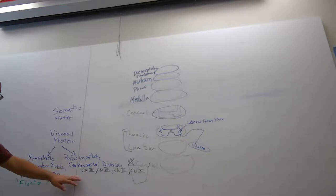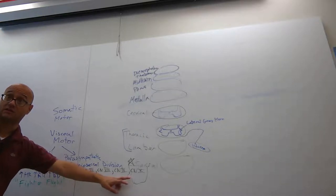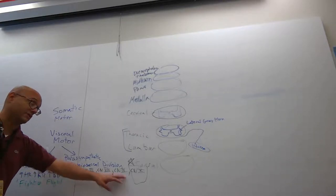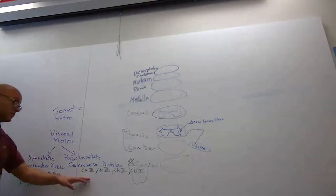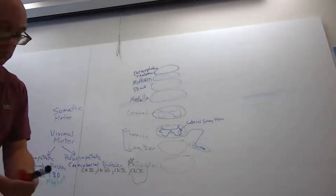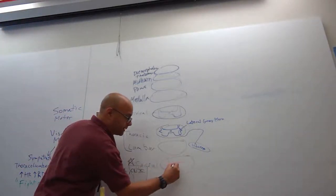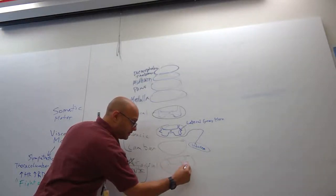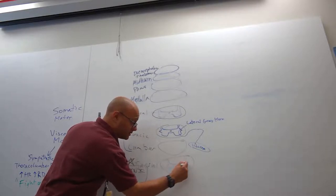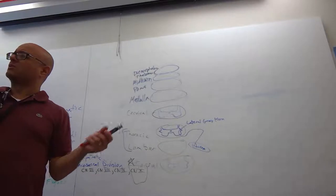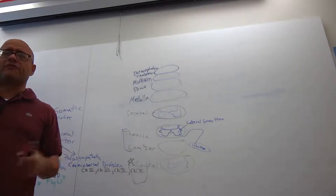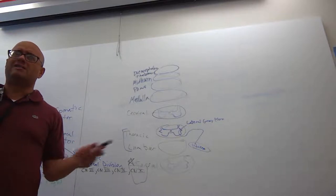If I'm rest and digest — craniosacral — these cranial nerves, the majority being the vagus, do the eye, the back of the throat, the oral cavity, and taste. It's the craniosacral division. When I draw my sacral spinal cord segments, I'm going to have these little lateral gray horns. I didn't know this until I looked it up — where are those sacral fibers originating from? Sacral has lateral gray horns too.